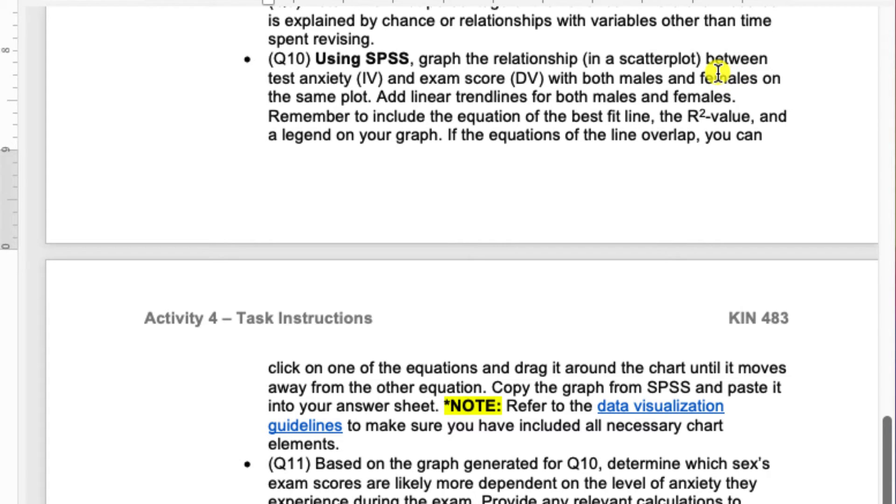All of the elements that we had in the previous graph using Excel should also be included in this graph. And specifically, I want you guys to add trend lines for both males and females. So there should be two trend lines, two equations of those lines, and then two r-squared values in your graph.